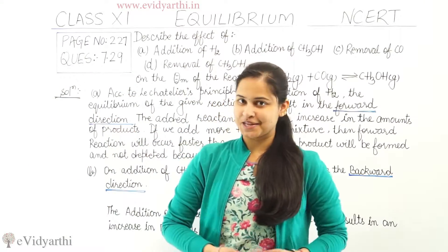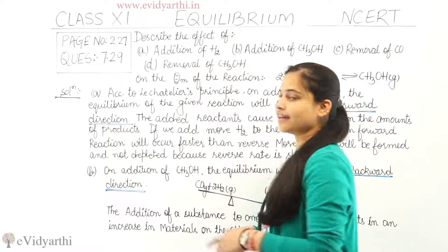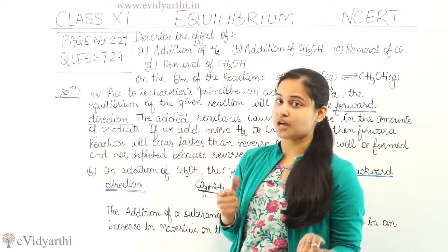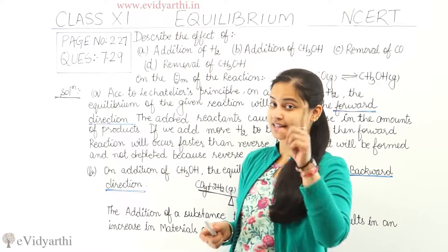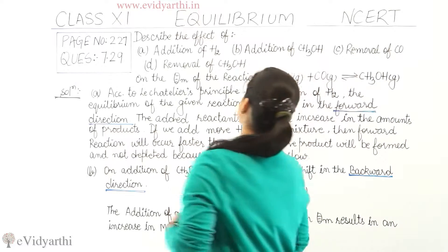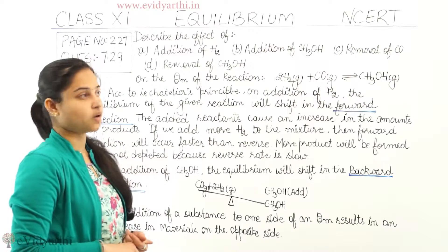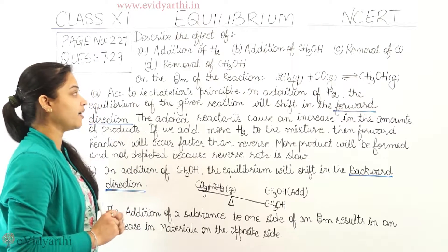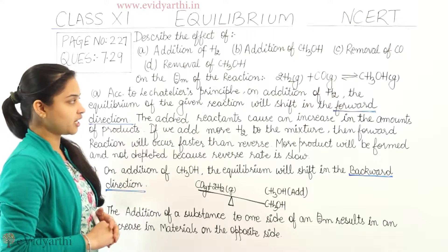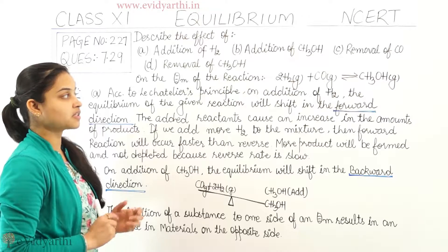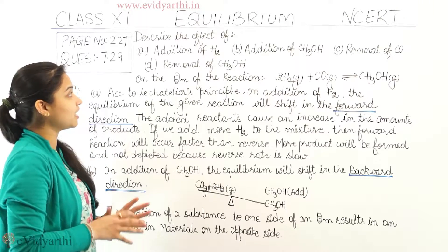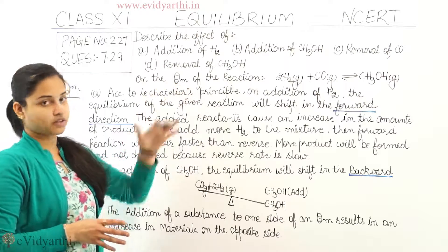Hello guys, I'm Raghi and in this session I'm going to discuss question number 29 on page number 227. The question is from Chapter 7, Equilibrium, NCERT Class 11. The question asks us to describe the effect of: (1) addition of hydrogen, (2) addition of CH₃OH (methanol), (3) removal of CO, and (4) removal of CH₃OH on the equilibrium of the reaction: 2H₂(g) + CO(g) ⇌ CH₃OH(g). We need to tell the effect on the equilibrium of the reaction.